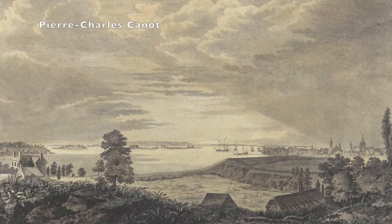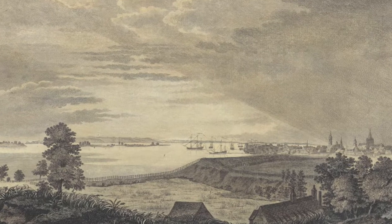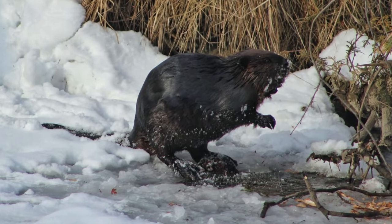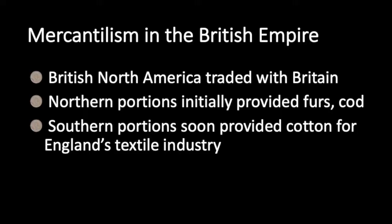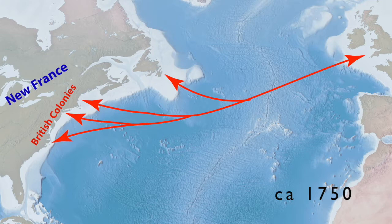In the context of British North America, theoretically at least, all of the colonies traded exclusively with Britain. Initially, the most important resources in the northern colonies were furs and cod, while southern colonies, after bringing in thousands of Africans forced into slavery, became a major source of cotton for Britain's textile industry. France had its own colonies focused on the fur trade, while Spain had colonies in the southern portions.